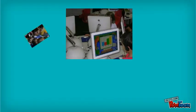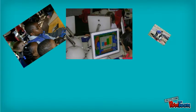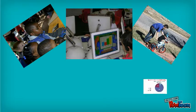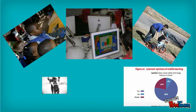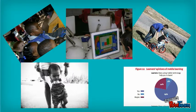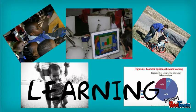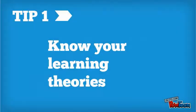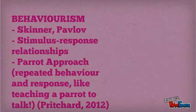Ormrod describes learning as a long-term change in mental representations as a result of experience. There are multiple learning theories which are important to understand for primary teachers, along with their implications for both teaching and learning in the classroom. Let's have a look at some of these now.